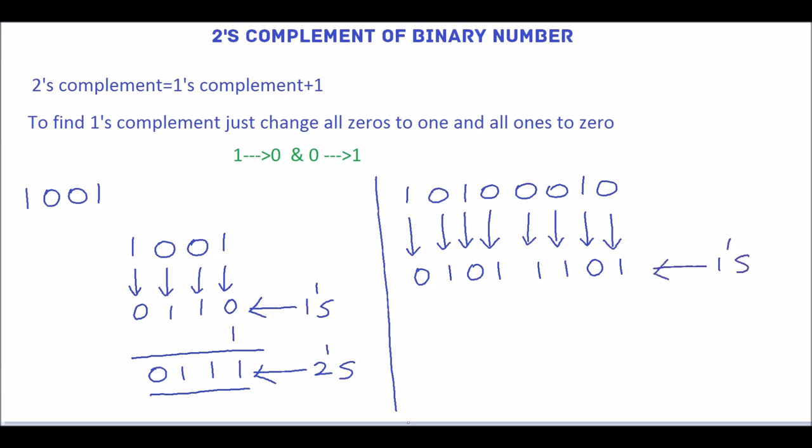To get 2's complement, add 1 with this. 1 plus 1 is, sum is 0, carry 1, so here 1, then write the remaining digits.